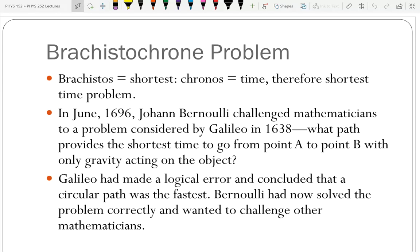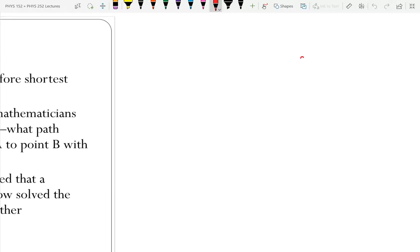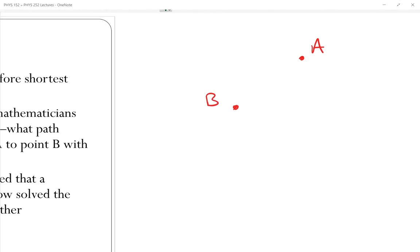In June 1696, Johann Bernoulli challenged mathematicians to consider a problem that Galileo had done incorrectly in 1638. That problem is what path will take the shortest time in going from point A to point B. Galileo had mistakenly said that should just be a piece of a circle.